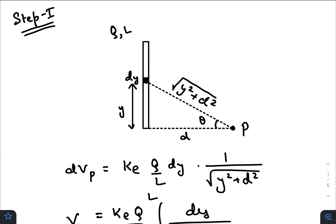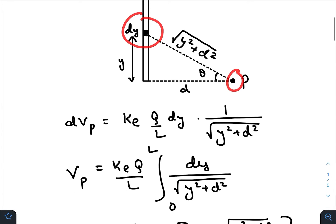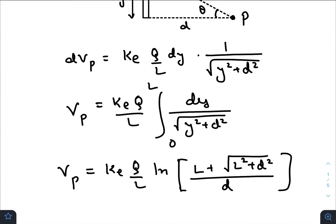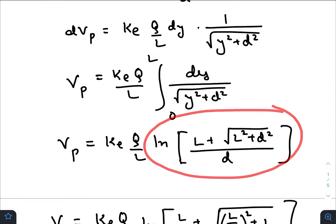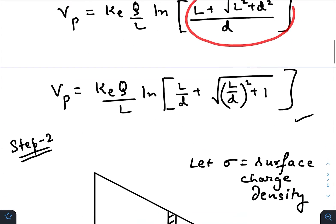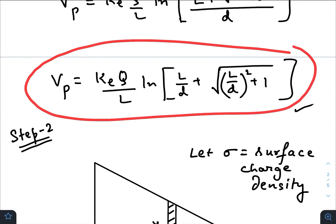That would be k_e dq, which is charge per unit length times the length of the small charge, divided by this distance. So integrating for the whole rod from 0 to L, we will get something like this after putting the limits. I am not discussing this part; this is child's play for you all. After putting down the limits, we will get this one. Simplifying it a little bit further, we get this thing.